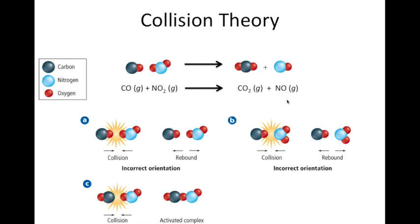Now let's look at a diagram showing a reaction between carbon monoxide and nitrogen dioxide, which react to form carbon dioxide and nitrogen monoxide. In order for CO and NO2 to form CO2 and NO, they must collide in the correct orientation. The oxygen on the carbon monoxide must collide right here on the carbon atom in order for that bond to form. Here we're showing a couple of ways they may collide that are not the correct orientation — for example, if the two oxygen atoms collide, those aren't going to form our products.